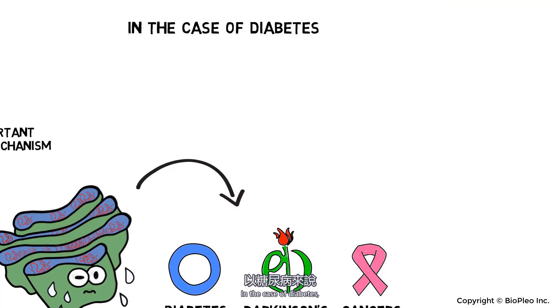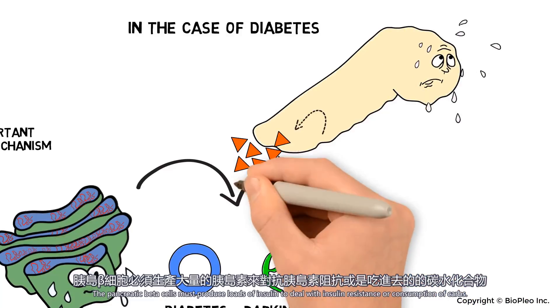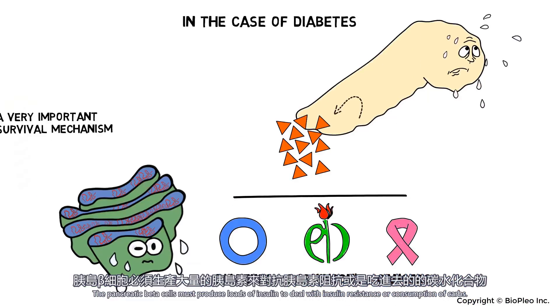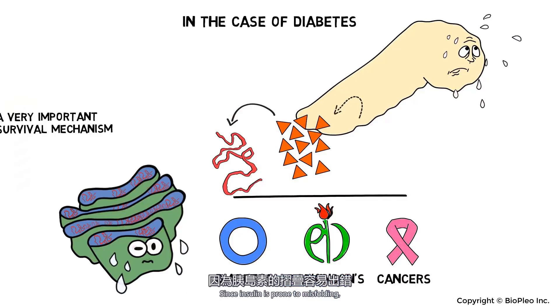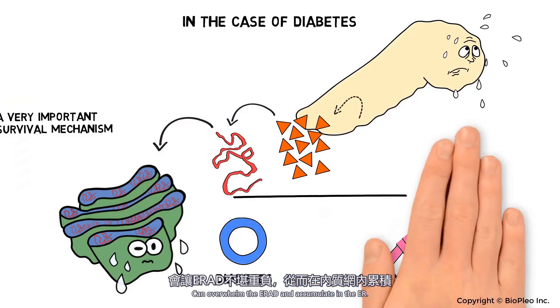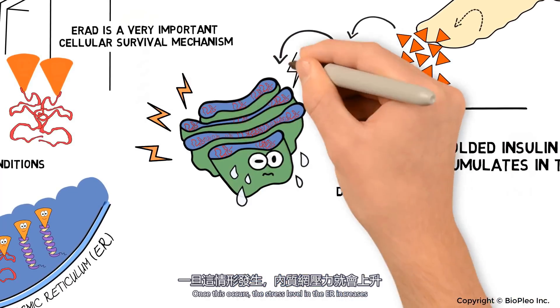In the case of diabetes, the pancreatic beta cells must produce loads of insulin to deal with insulin resistance or consumption of carbs. Since insulin is prone to misfolding, the overproduced misfolded insulin can overwhelm the ERAD and accumulate in the ER.